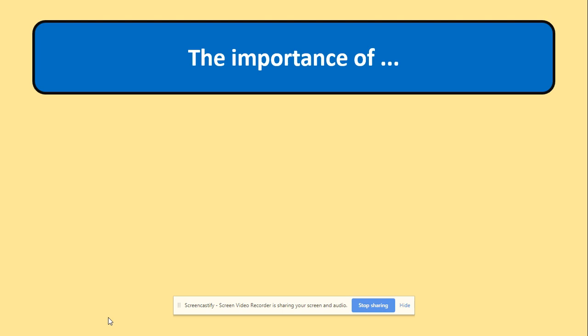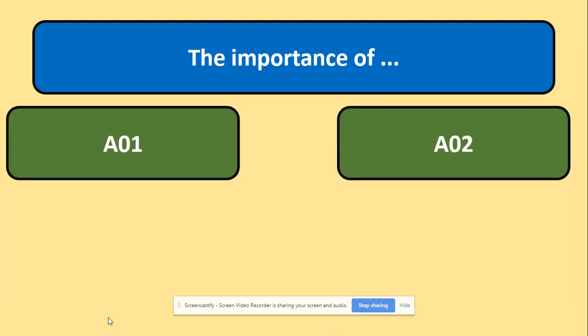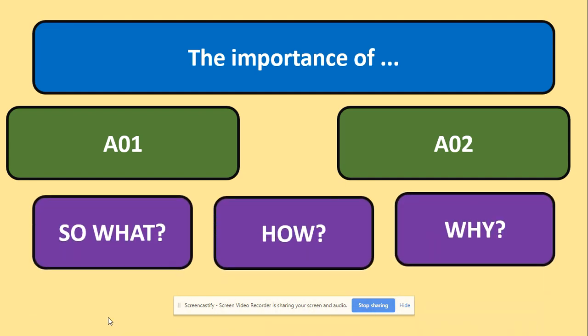What do they actually want from you? They would like you to use your AO1 and AO2 skills. AO1 is the use of correct, key A-level terminology. AO2 is to explain your points and make links between topics. AO2 comes with 'so what', 'how', and 'why' — why is your argument important, and how can you link it to your next paragraph?